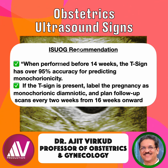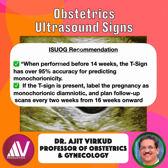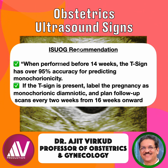When performed before 14 weeks, the T-sign has over 95% accuracy for predicting monochorionicity. If the T-sign is present, label the pregnancy as monochorionic diamniotic and plan follow-up scans every two weeks from 16 weeks onwards, as per International Society for Ultrasound in Obstetrics and Gynecology, ISUOG, and AIUM guidelines.